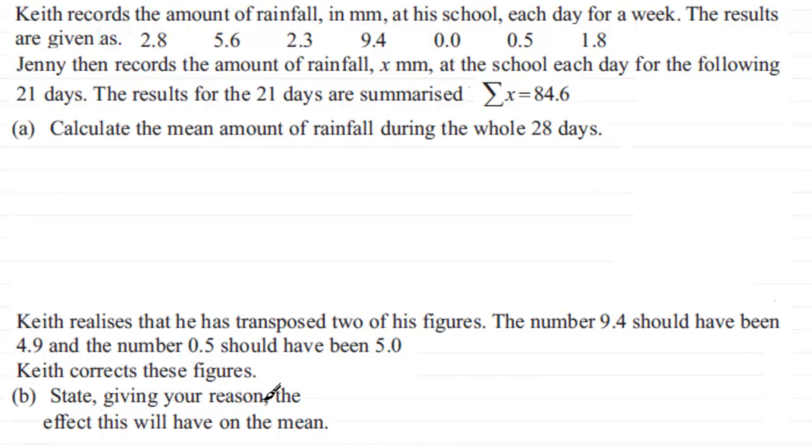Okay, well in the first one, Keith records the amount of rainfall in millimeters at his school each day for a week and the results are given below. Jenny then records the amount of rainfall as x millimeters at the school each day for the following 21 days, and the results for the 21 days are summarized as the sum of them, Sigma x equals 84.6.